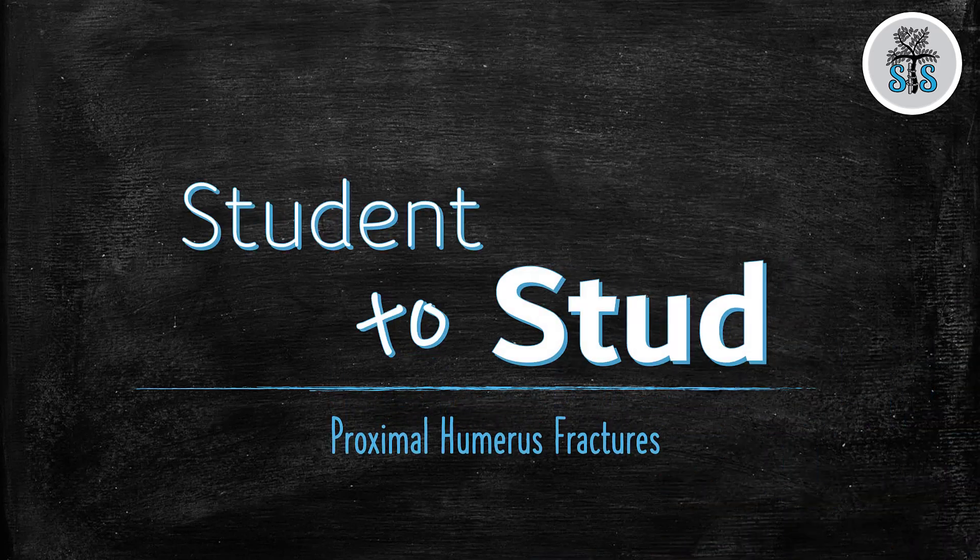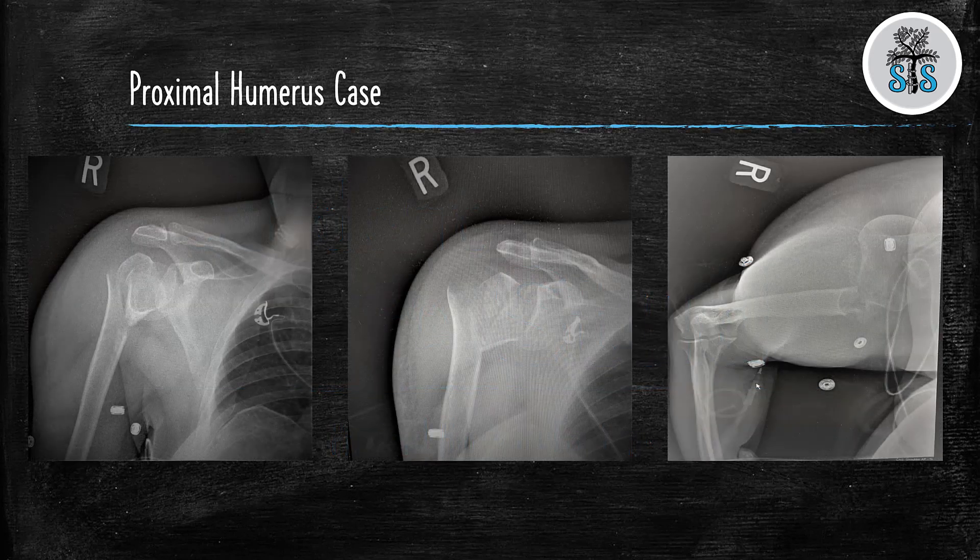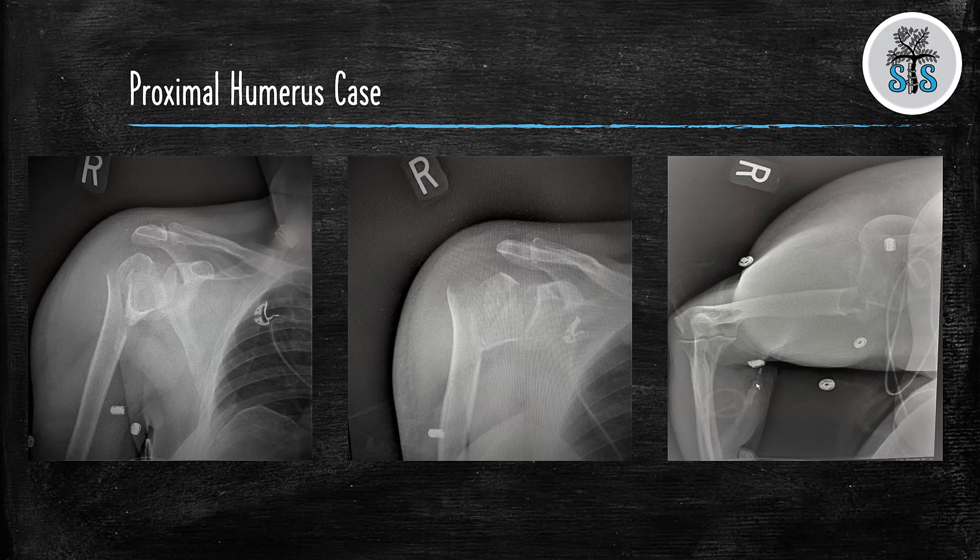Welcome back to Student Stud. Today, we're going to cover proximal humerus fractures. First, we're going to start with a case. Say you have a 68-year-old female that presents to the emergency department after a motor vehicle accident. The resident's currently in surgery and asks you to read them the x-rays. What would you say? You'd say you have three views of the right shoulder and a skeletally mature individual demonstrating a four-part fracture dislocation of the proximal humerus.